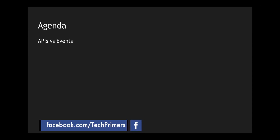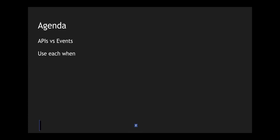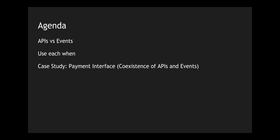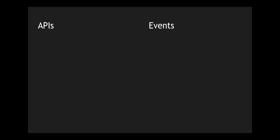The agenda is straightforward. We are going to look at APIs versus events — the basics, then compare and contrast both of them. We will see when to use APIs and when to use events. Then we will look at a case study by designing a payment interface and see how we can overlay APIs and events within the same architecture and how they can coexist. Finally, we will look at some of the limitations within APIs and also events.